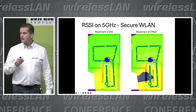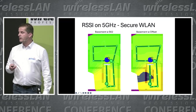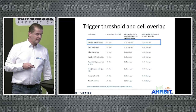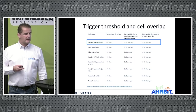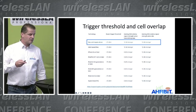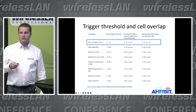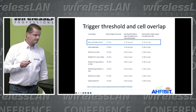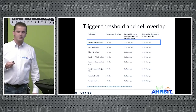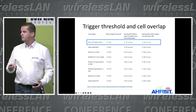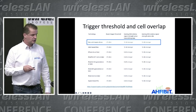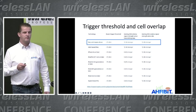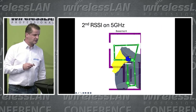The roaming threshold I was looking at was around minus 75 dBm. But the secondary signal strength also needs to be strong enough. Diving into the secondary signal strength revealed my big problem: I didn't have enough secondary signal strength because the AP on the ground floor and the AP in the basement couldn't see each other well enough.